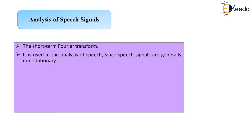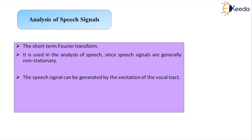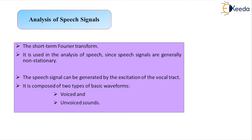Speech signals can be generated by the extraction of the vocal tract, and they are composed of two types of basic waveforms: voiced waveform and unvoiced waveform, which are basically sounds.